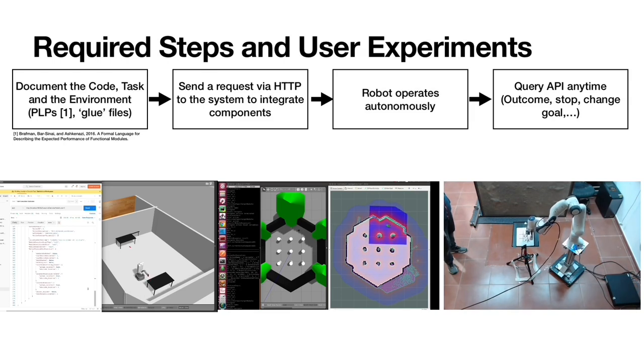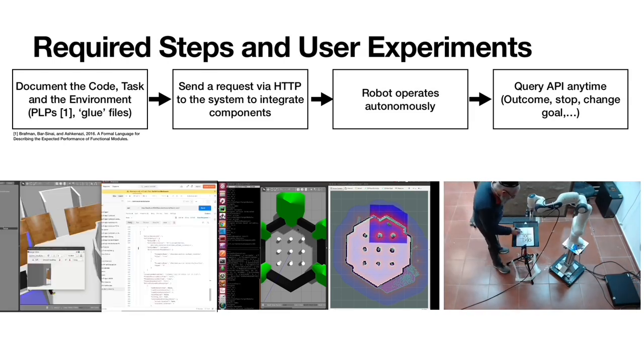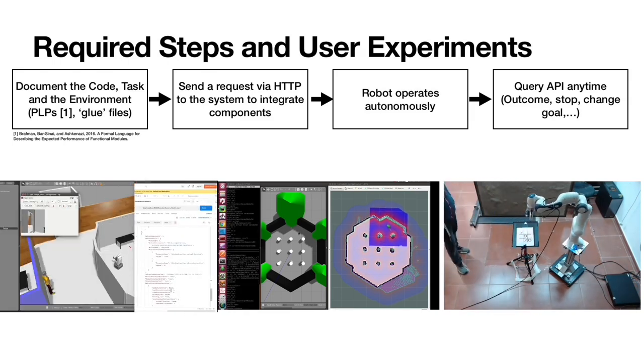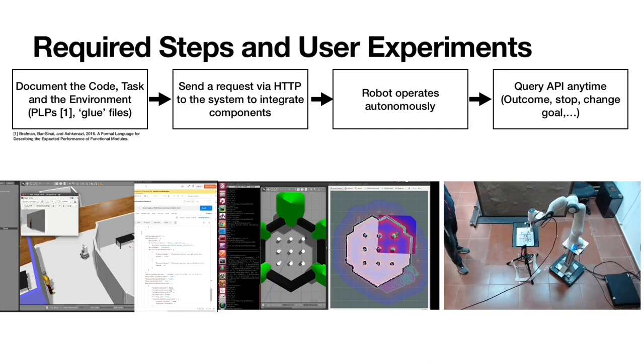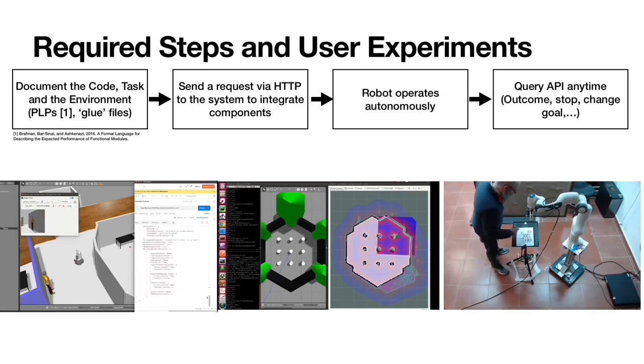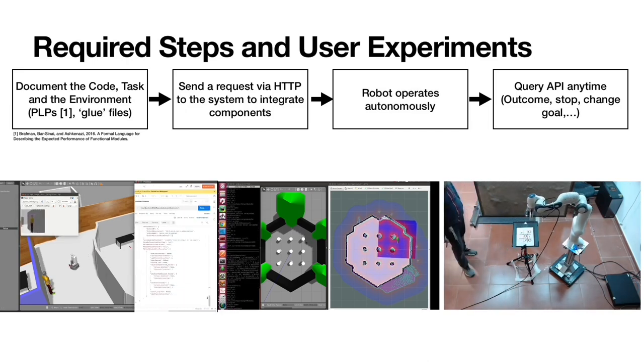In the videos, you can see some of our experiments. On the left-hand side, you see an armadillo bring a can to a human. In the middle, a TurtleBot finds the shortest path. And on the right-hand side, we play Tic-Tac-Toe against the Panda.